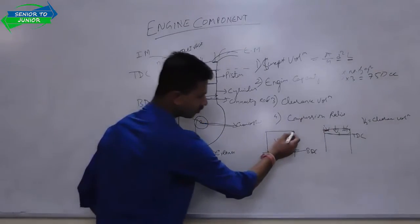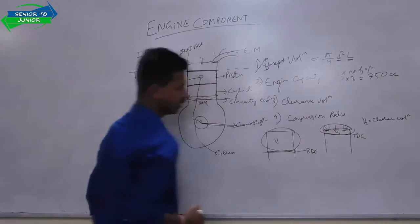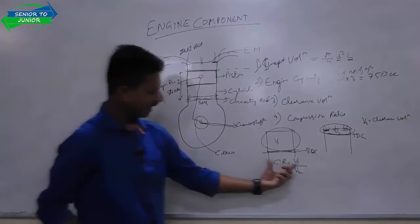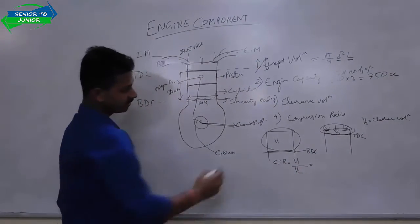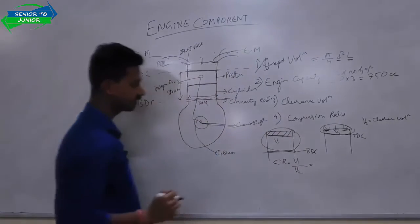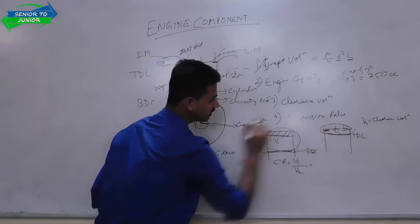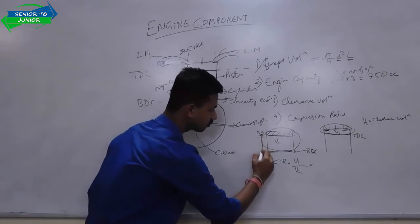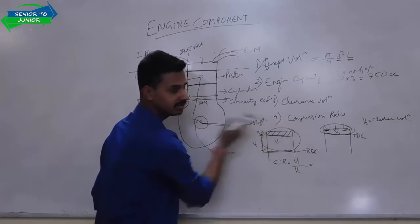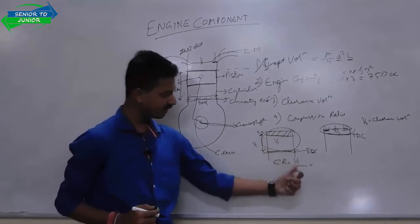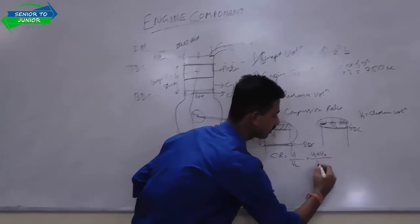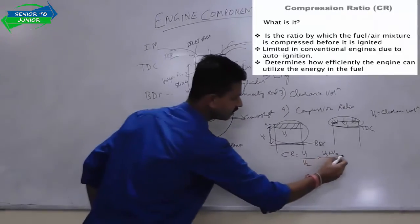Compression ratio is the total volume divided by the clearance volume. Total volume includes clearance volume plus swept volume. So compression ratio equals V1 by V2, which can be written as swept volume plus clearance volume, all divided by clearance volume. This is the definition of compression ratio.